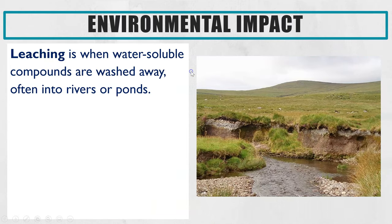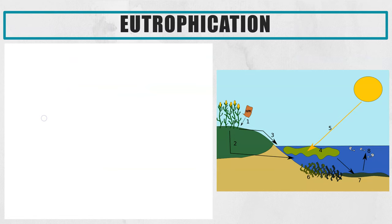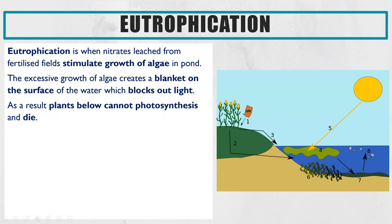Looking at the environmental impacts — leaching means the water-soluble compounds, in this case the fertilizers, are dissolved within the rainwater. They then trickle through the soil and wash away to nearby rivers or ponds.